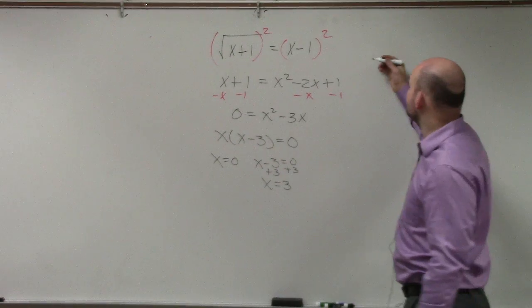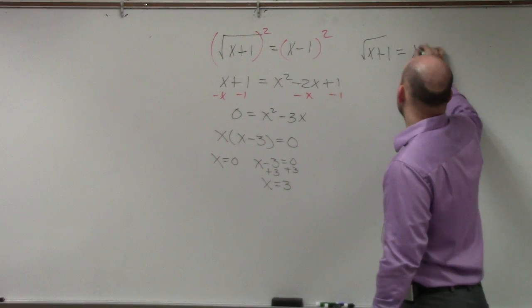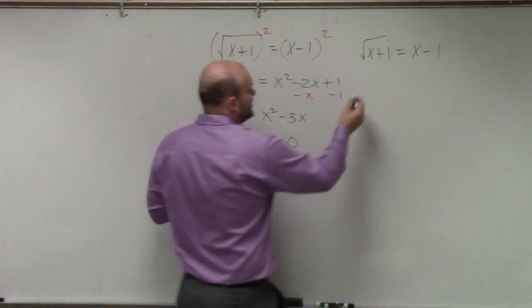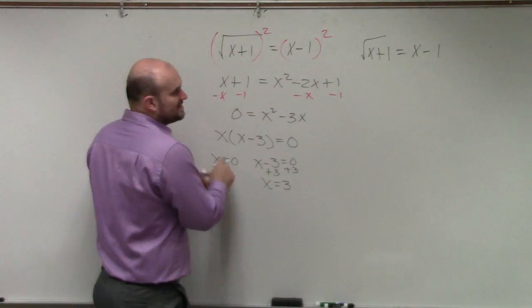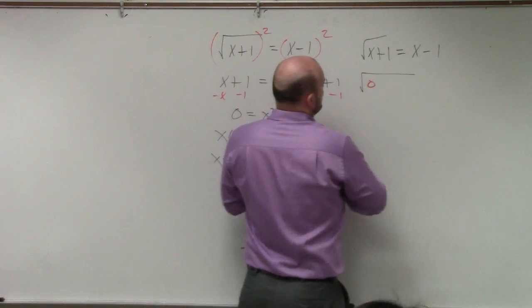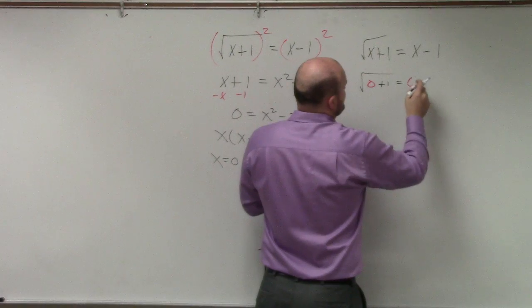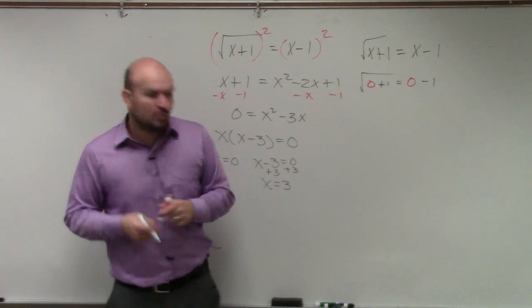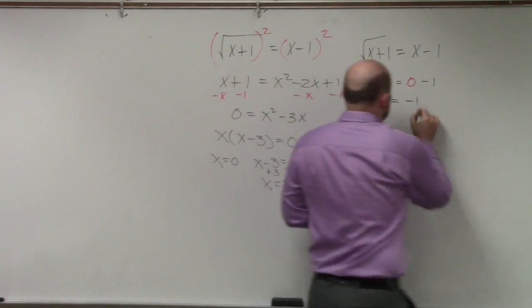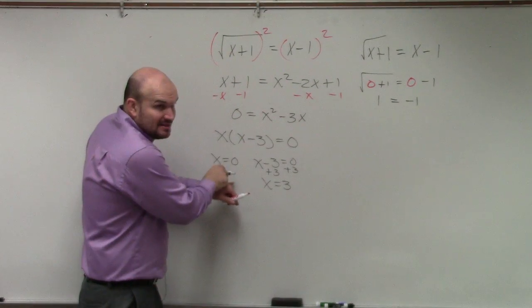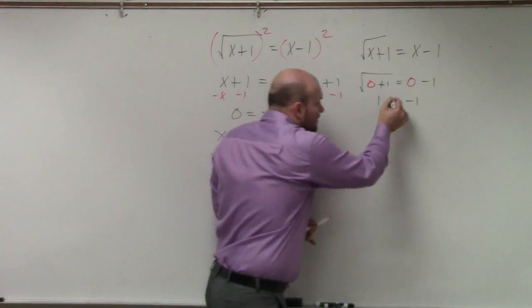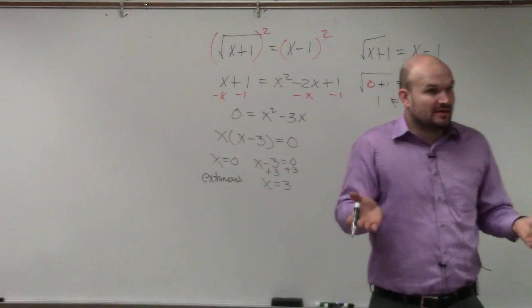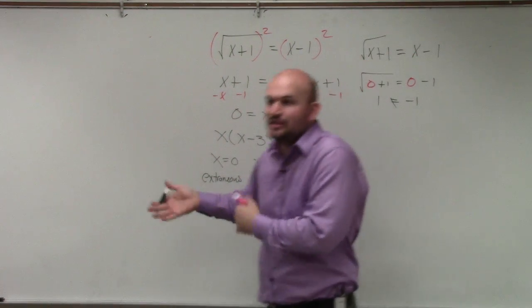Let's go back to our original equation: the square root of (x + 1) equals x minus 1. Let's test x = 0. The square root of (0 + 1) equals 0 minus 1 — that's the square root of 1, which is 1, on the left side, and negative 1 on the right side. Even though I did the math correctly, when I plug the answer back in it's not correct. So this is what we'd call extraneous — it's actually not a solution.